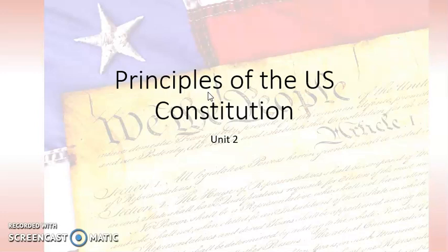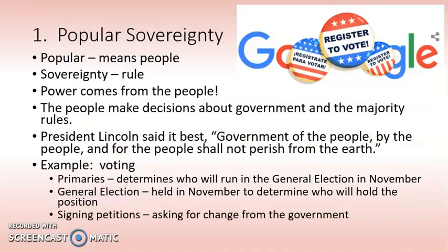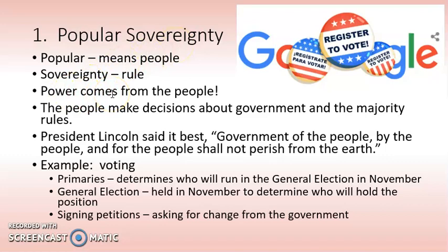We're going to look at some principles of our Constitution today. The first principle is Popular Sovereignty. 'Popular' means people — when you think of someone who's popular, a lot of people like or follow them. Inside the word 'Sovereignty' is the word 'Reign,' R-E-I-G-N, which means rule. So in our country, people rule, because the power comes from the people.